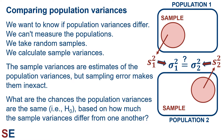However, we can test whether our samples provide enough evidence to decide whether the population variances are probably different or may well be the same. We do this by asking: what are the chances that the population variances are the same — that's our null hypothesis — based on how much the sample variances differ from one another? As illustrated by the diagram, we take a sample from each population and calculate the sample variances to try to figure out if the population variances look the same or seem to differ.